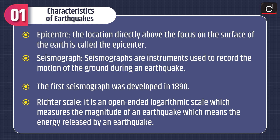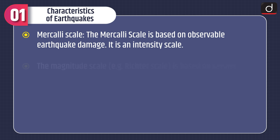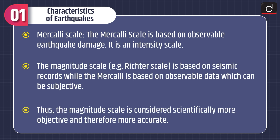Seismographs are instruments used to record the motion of the ground during an earthquake. The first seismograph was developed in 1890. The Richter scale is an open-ended logarithmic scale which measures the magnitude of an earthquake — that is, the energy released by an earthquake. The Mercalli scale is based on observable earthquake damage and is an intensity scale. The magnitude scale, like the Richter scale, is based on seismic records, whereas the Mercalli scale is based on observable data which can be subjective. Thus, the magnitude scale is considered scientifically more objective and therefore more accurate.